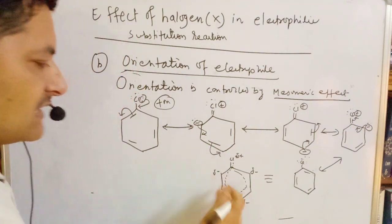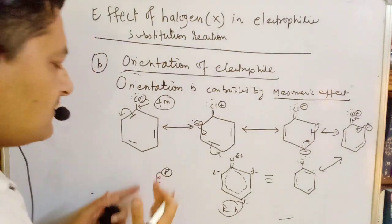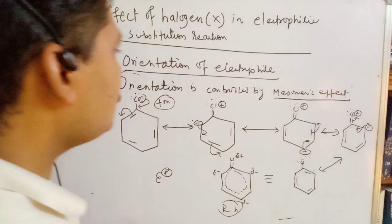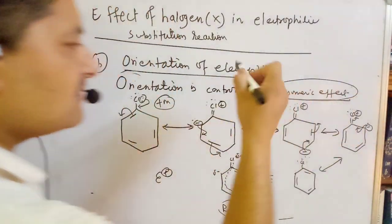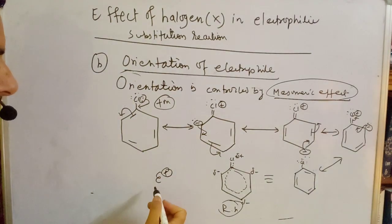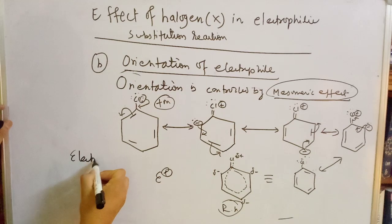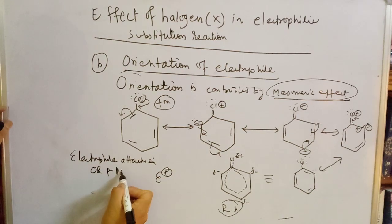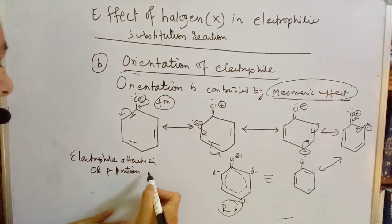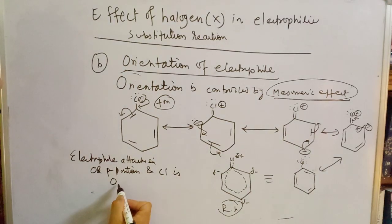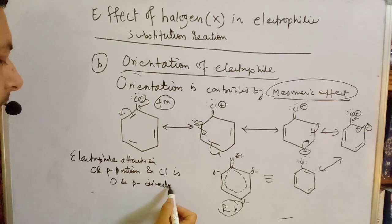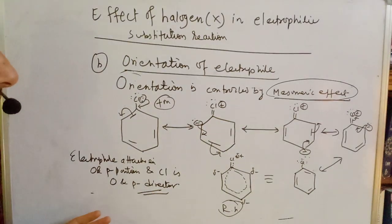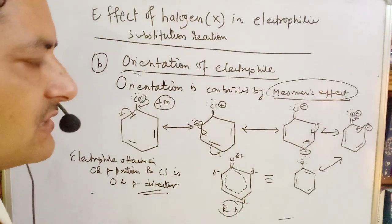Using resonance structures, we can see where the negative charge is concentrated — at the ortho and para positions. The electrophile attacks the ortho and para positions. Therefore, chlorine is an ortho and para director. This is how the mesomeric effect controls the orientation of electrophilic attack.